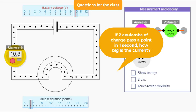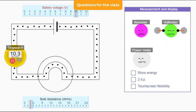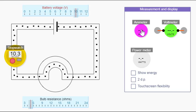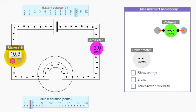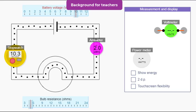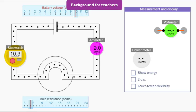If two coulombs of charge pass a point in one second, how big is the current? Two amperes. Let's just check our answer with our ammeter. So we have another useful equation: current flowing past a point equals charge divided by time.